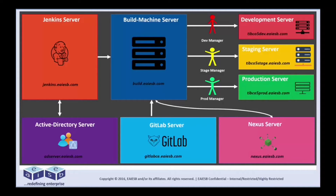Components like Jenkins, Build Machine, GitLab, Nexus Artifact Repository, Active Directory, and Development, Stage, and Production servers can be seen here, relatively working together for an effective DevOps environment.